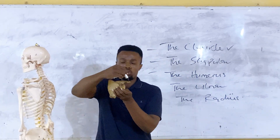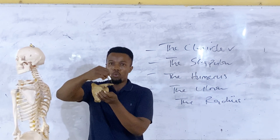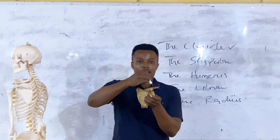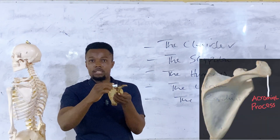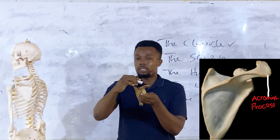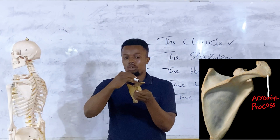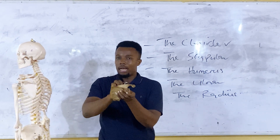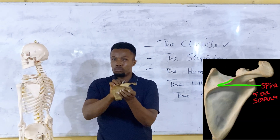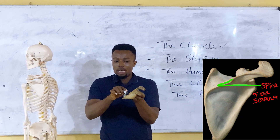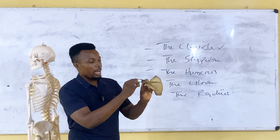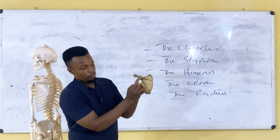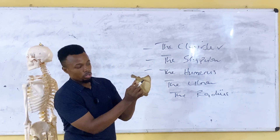We can also see this wing-like structure — this is referred to as the acromion of the scapular, giving off the acromial process. The acromion continues as the spine of the scapular. You can see this sharp edge, which is the spine of the scapular.